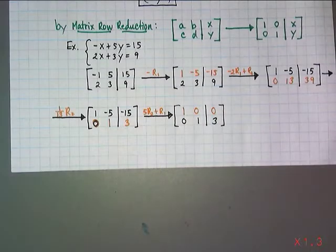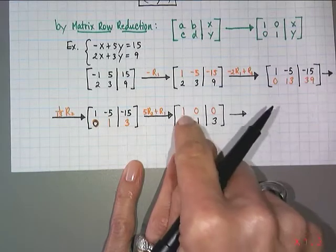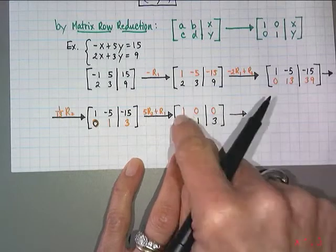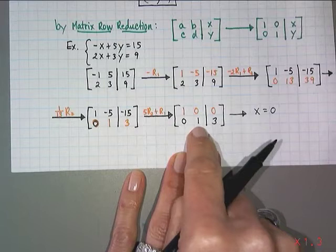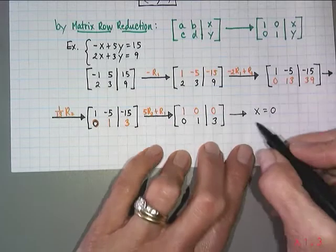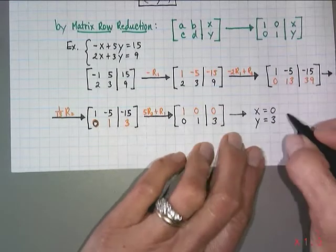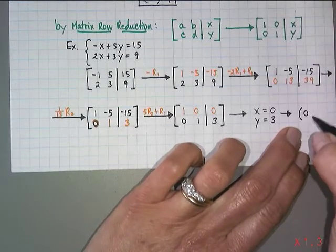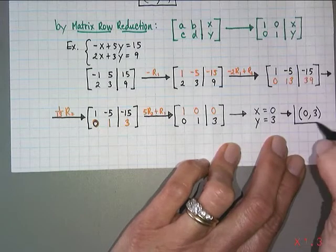I've got my answer right in front of me. I can see that since I've got a one in that first row first column, that tells me that x equals zero. The one in the second row second column tells me y equals three. How do we write our answers for systems of equations? As ordered pairs. So the ordered pair zero comma three is the solution.